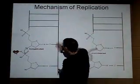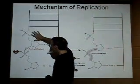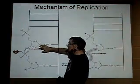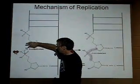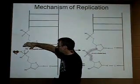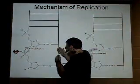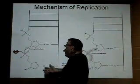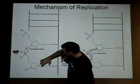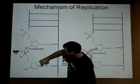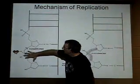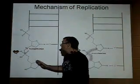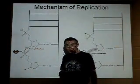Let's zoom in on that. Here's the template, and here's the 3 prime end of the primer. At the very 3 prime end, we have an adenine nucleotide with its 3 prime carbon bearing a hydroxyl group. The next base in the template is a cytosine, so an incoming dNTP with a guanine pairs by complementary base pairing, getting that dNTP into position, ready to be covalently attached onto the end.